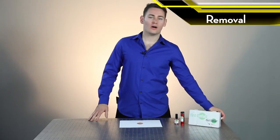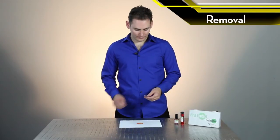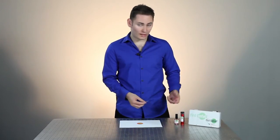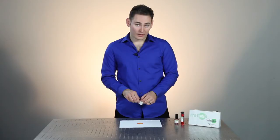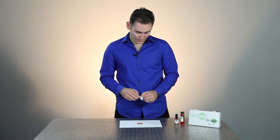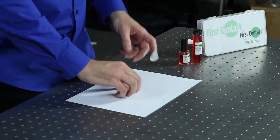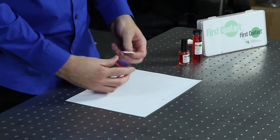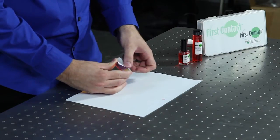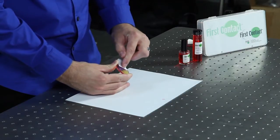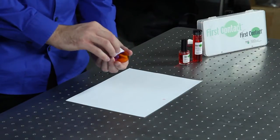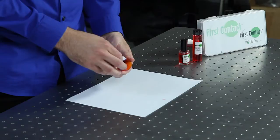One way to remove First Contact Polymer is with the included peel tabs. Here I have half of a peel tab I tore off of the 30 that come with the kit. I'm just going to remove it from the paper, apply it to the surface, just gently press it down, and then peel the polymer off in one pull.